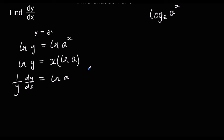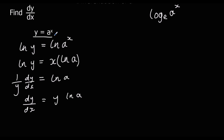Now we want dy/dx on its own, so we multiply both sides by y. So dy/dx equals y ln a. We can then change y back to a to the power of x, because y equals a to the power of x. So dy/dx is a^x ln a.